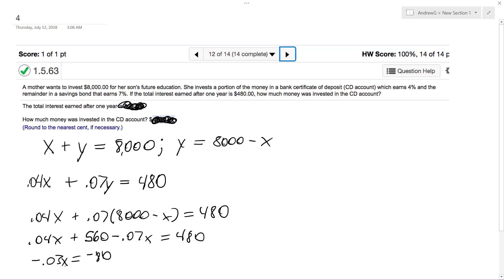That should be X. So that divided by negative 0.03. And then X we get $2,666.67 is what it rounds to.